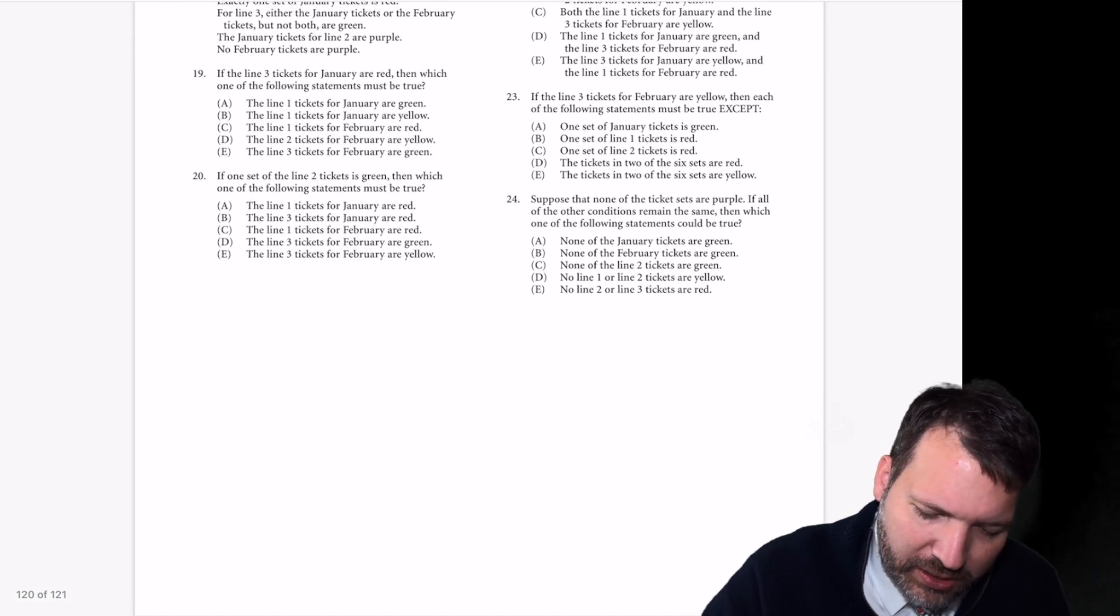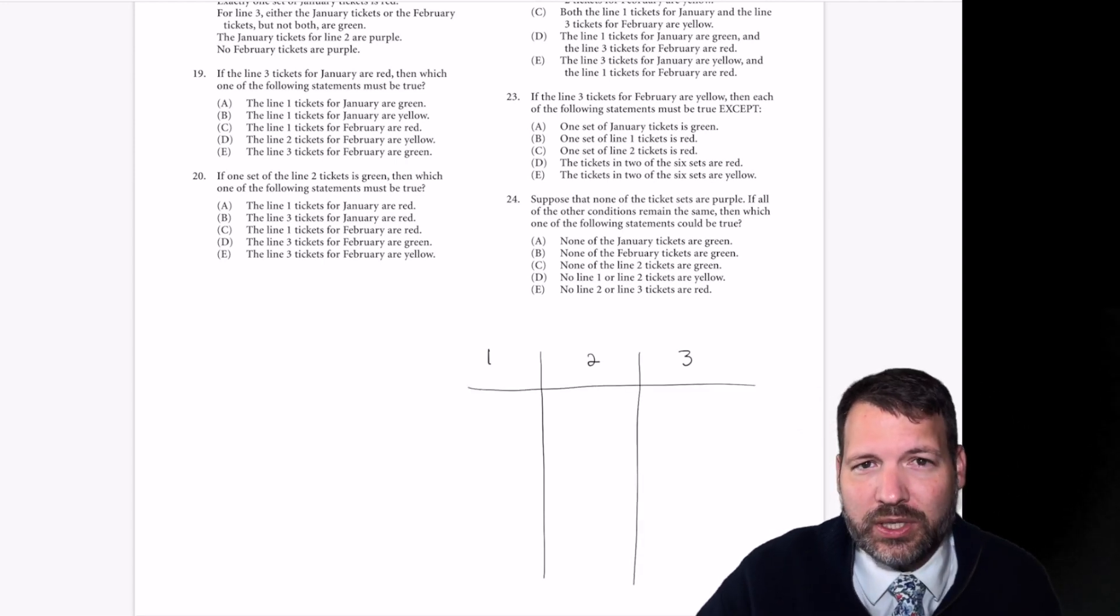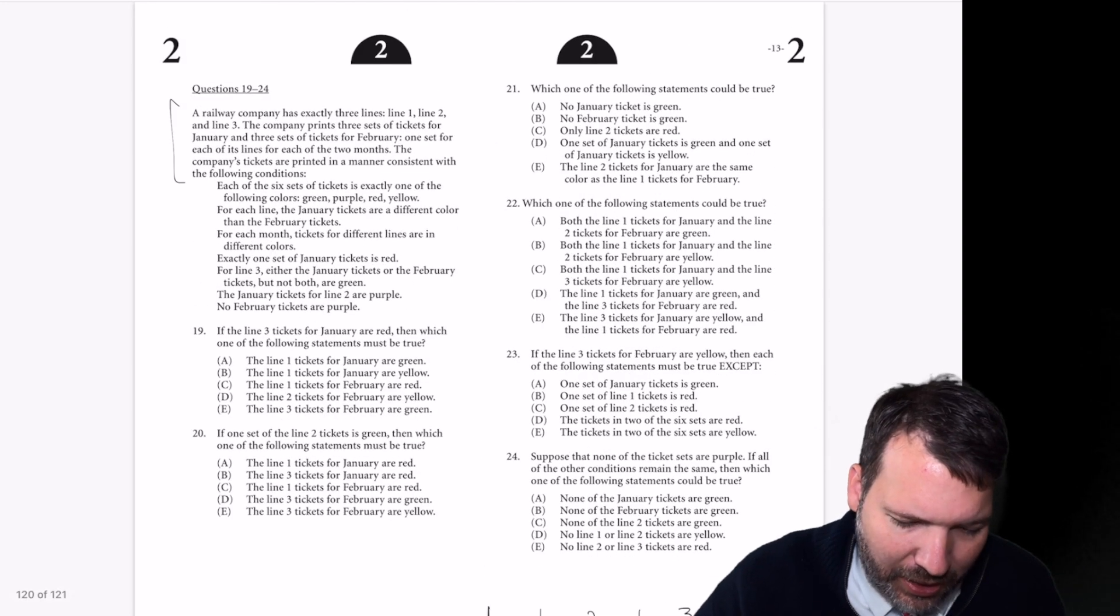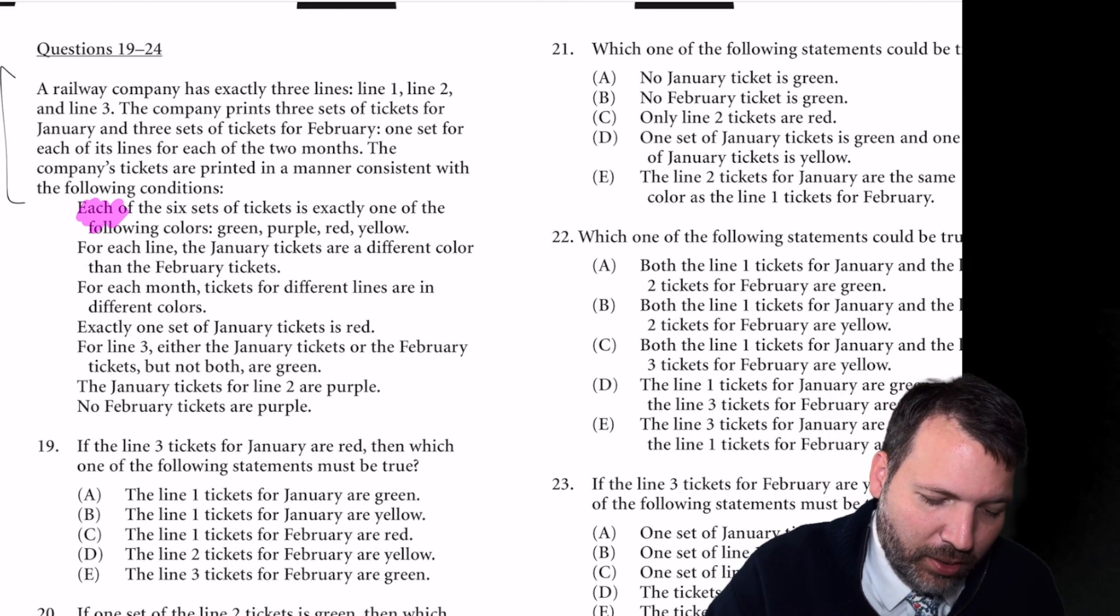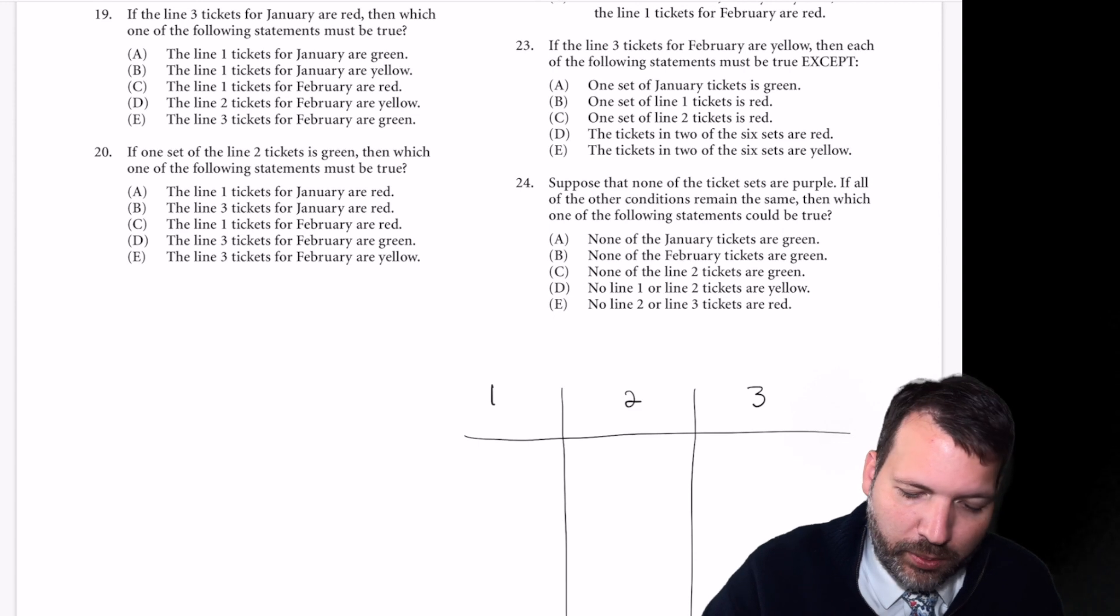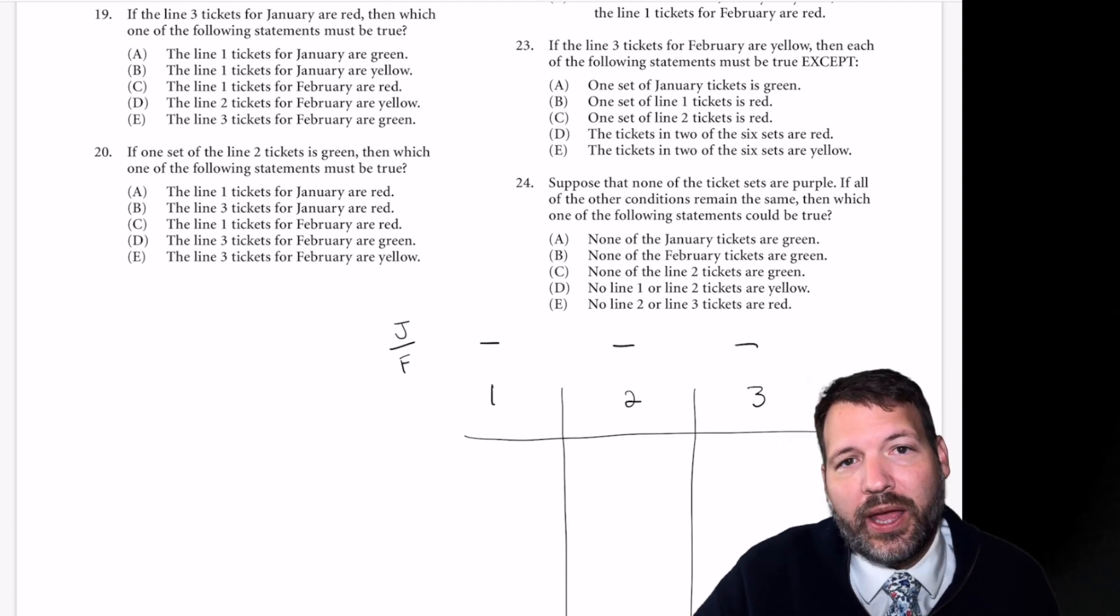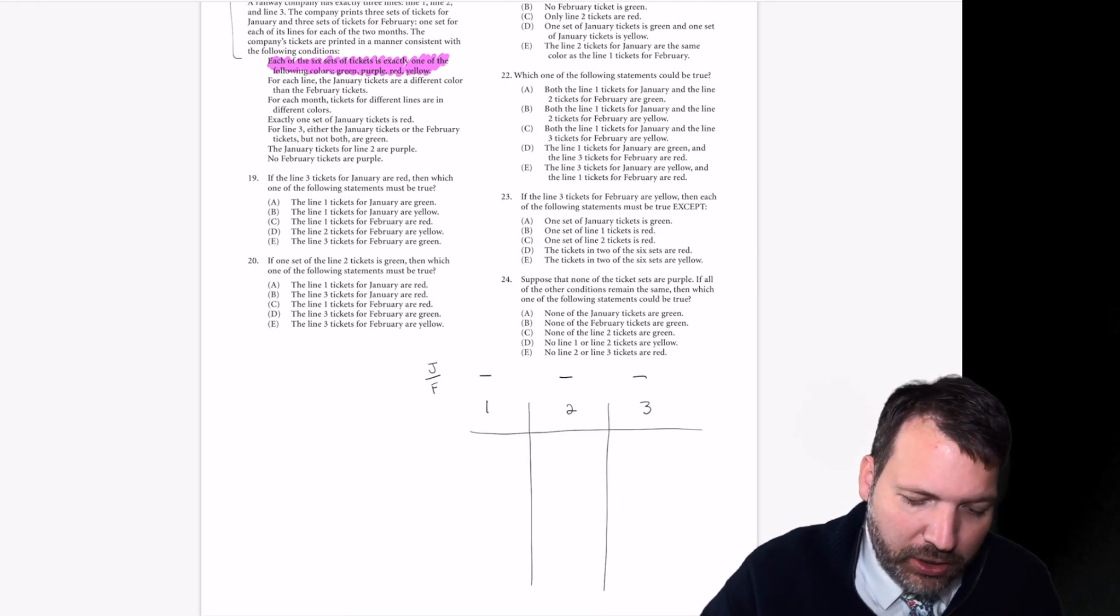I think the best setup here will be one that almost looks like an order setup, although I don't think this is an order game. We're not really arranging the sets of tickets. It's something about the coloring on the tickets. You'll notice this game is a little bit strange in that the elements we're going to place into our spaces don't actually appear until we read that first clue. We've got January and February tickets for each one of the lines. We'll just do January on top and February on bottom.